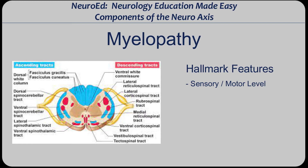These patients will have numbness or tingling up to a certain point in their body — whether it be their belly button at T10, their nipple line at T4, or the xiphoid at T6. Whatever the level is, they have numbness and tingling below that level, weakness below that, and are completely normal above it.